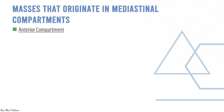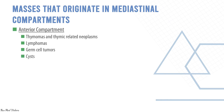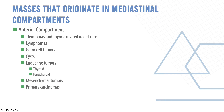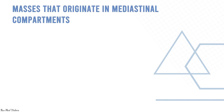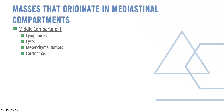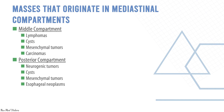Masses originating in the anterior compartment include thymomas and thymic-related neoplasms, lymphomas, germ cell tumors, cysts, endocrine tumors of the thyroid and parathyroid, mesenchymal tumors, and primary carcinomas. Masses in the middle mediastinal compartment include lymphomas, cysts, mesenchymal tumors, and carcinomas. Posterior compartment masses include neurogenic tumors, cysts, mesenchymal tumors, and esophageal neoplasms.